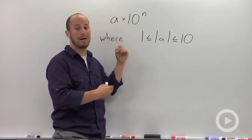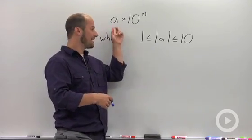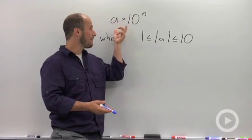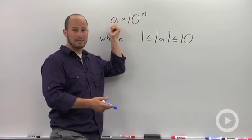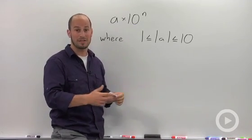I say the absolute value because this a term could be positive or negative. So basically it has to be between 1 and 10. If a is 14 or something like that, we need to adjust our 10 to move that decimal back over one spot. Just like if it was 0.1, we would have to move that decimal over the other direction.